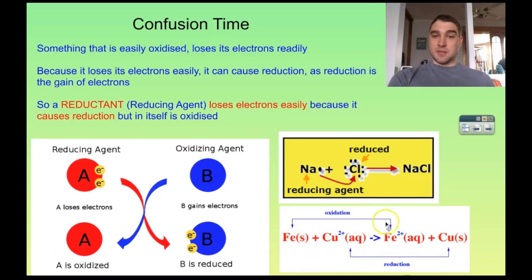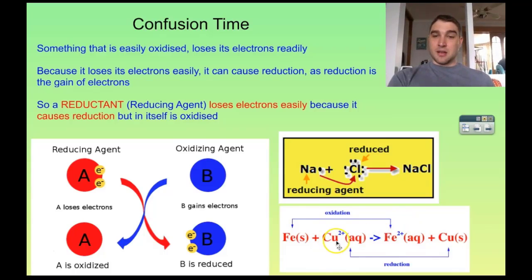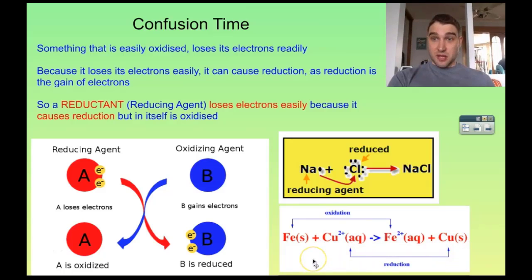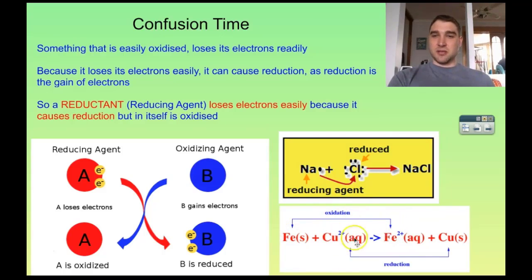Iron is being oxidized — it is losing two electrons to become iron 2+ ions. The copper ions are gaining two electrons to become solid copper, so the copper ions are being reduced. Therefore, because the iron is being oxidized to iron ions, it is causing the reduction by losing its electrons, which are then gained by the copper.